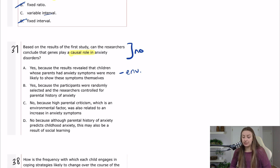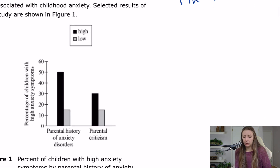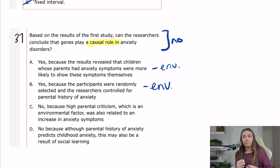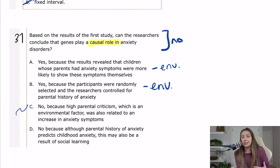Answer B says yes because participants were randomly selected and researchers controlled for parental history — but the same reasoning applies; environment could be playing a role. Answer C says no because high parental criticism, an environmental factor, was also related to anxiety — that's true but not the best reason. Answer D says no, because although parental history predicts childhood anxiety, this may also be a result of social learning — that's exactly the point about raising a child in an anxious household. Answer D is the best answer.